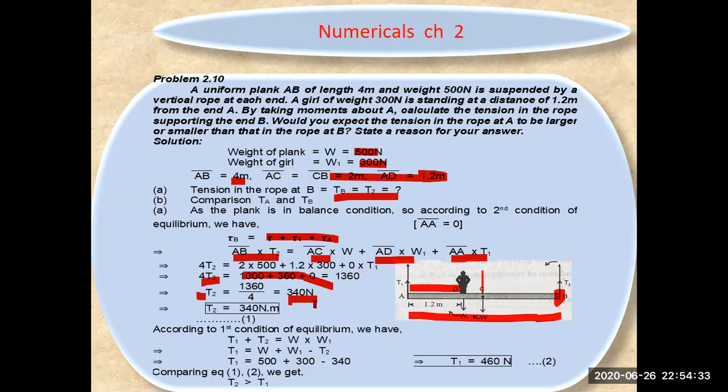According to the first condition of equilibrium, T1 plus T2 must equal W plus W2. The tensions act upward, the weights act downward. So T1 equals W plus W1 minus T2.